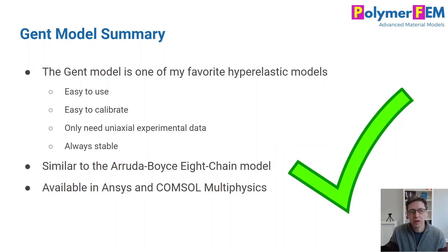So to summarize, the Gent model is easy to use, easy to calibrate, only needs uniaxial experimental data since it's I1-based. It's always stable. It has a lot of similarities to the Arruda-Boyce 8-chain model, which also has these three parameters, similar parameters, and they're always positive and always stable as well. And the Gent model is available in Ansys and COMSOL. And if you're interested in a simple-to-use hyperelastic model, you should consider the Gent model.